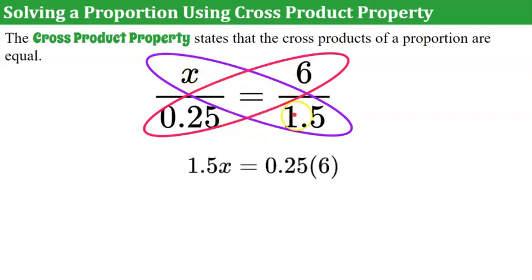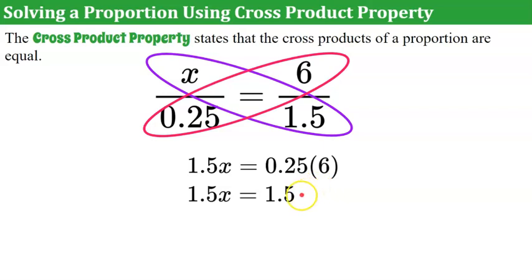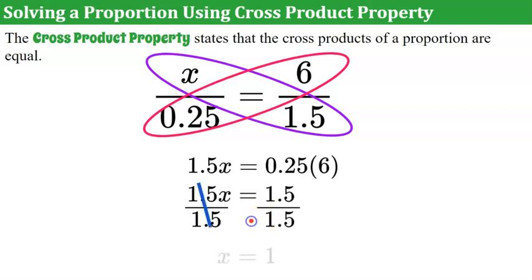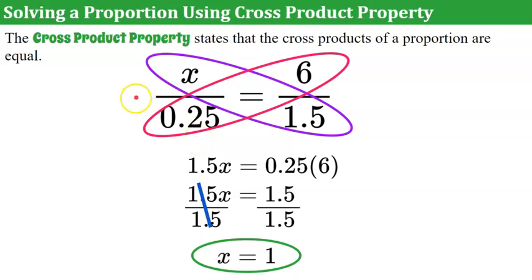So 1.5 times x equals 25 hundredths times 6. Multiply: one fourth of 6 is 1.5. Divide both sides by 1.5, and x is equal to 1. I think cross-product property is simpler, but some people like to use the multiplication method.